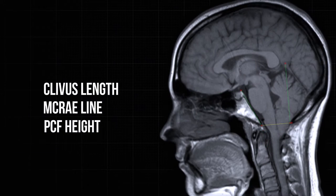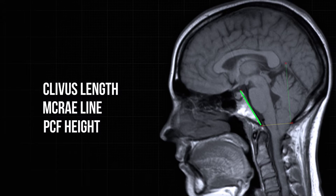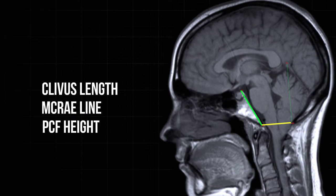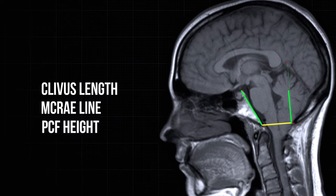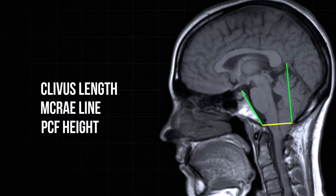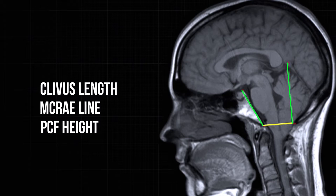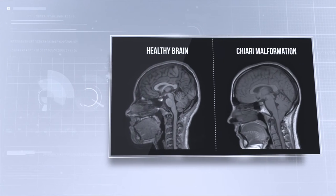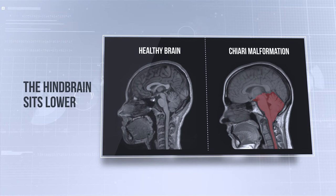These differences included a short clivus, which is a bone in the middle of the skull, a wider foramen magnum, which is the opening at the base of the skull, and a smaller posterior fossa height, which is the distance from the foramen magnum to the tentorium, which separates the cerebellum from the rest of the brain. They also found that the entire hindbrain sits lower in the skull for Chiari patients, not just the cerebellar tonsils.